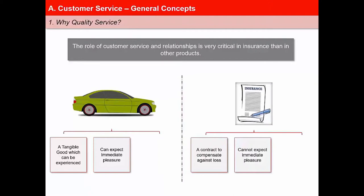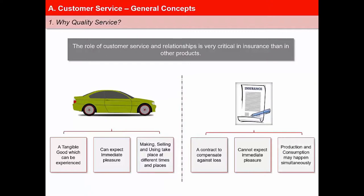Making, selling, and using of a car takes place at different times and places, whereas production and consumption of an insurance contract may happen simultaneously.